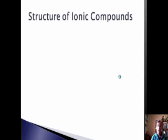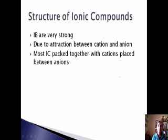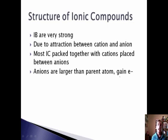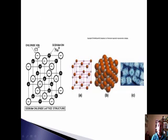Ionic bonds are very strong due to the attraction between cations and anions. Most ionic compounds are packed together with cations placed between anions in a very crystalline structure. Anions are larger than the parent atom because they gain electrons — for example, Cl1- is bigger than the parent chlorine atom. Cations are smaller than the parent atom because they lose electrons — Na+ is smaller than the parent sodium atom. In NaCl, you can see this lattice crystal structure, with smaller Na+ ions shown in silver and larger Cl- ions in red.